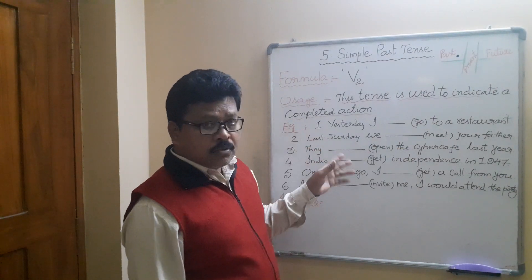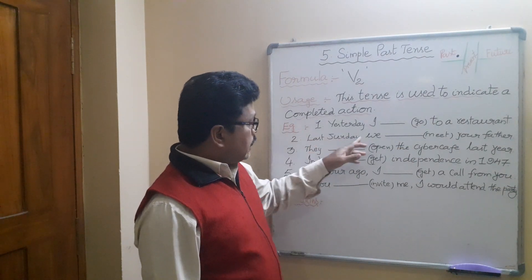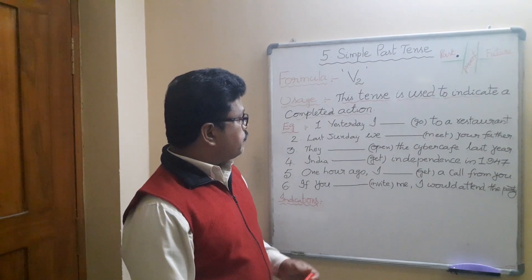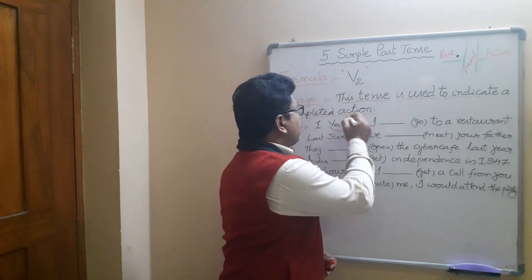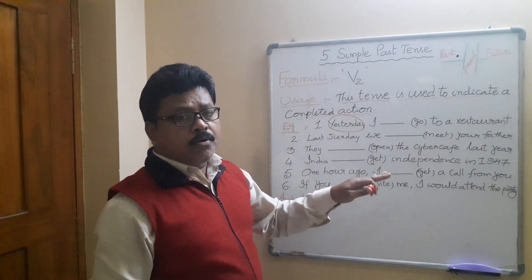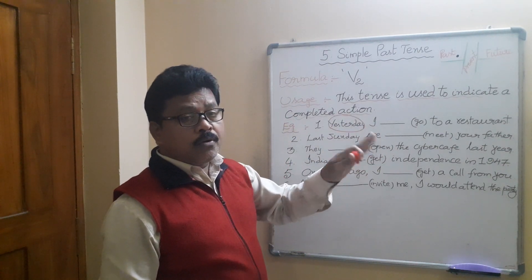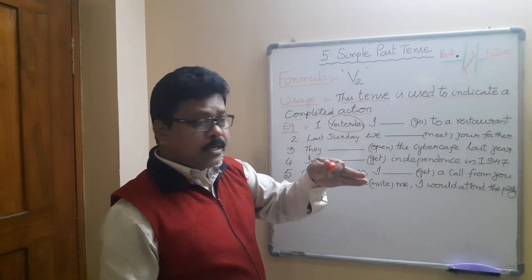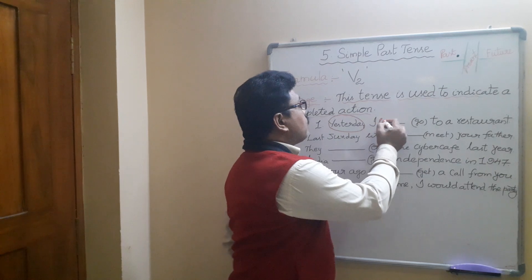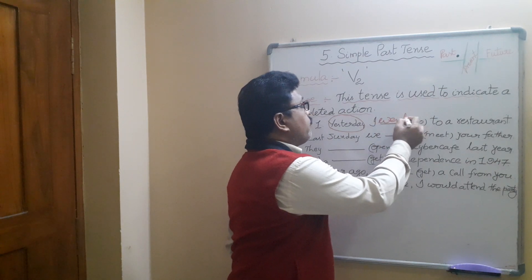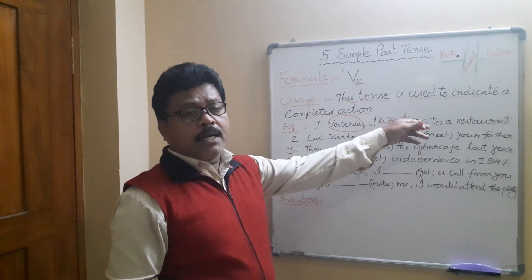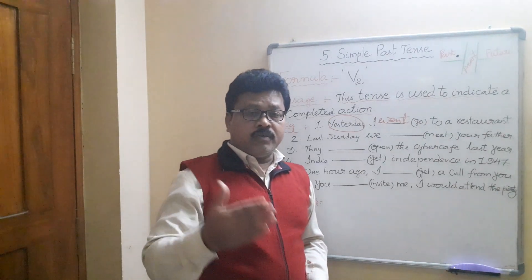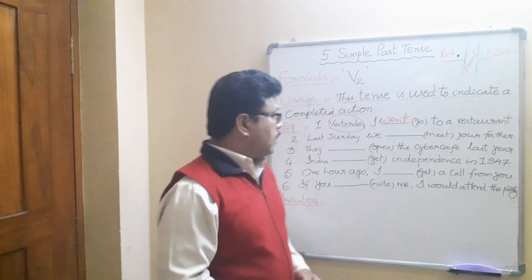Look at the examples. 'Yesterday I ___ (go) to a restaurant.' Yesterday — time is given. The V2 of go is went. So the answer is went. Yesterday I went to the restaurant. Yesterday I went to the movie. Yesterday we went to the library. So whenever 'yesterday' appears, we use V2.